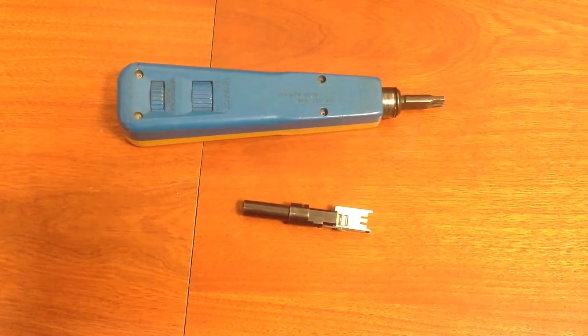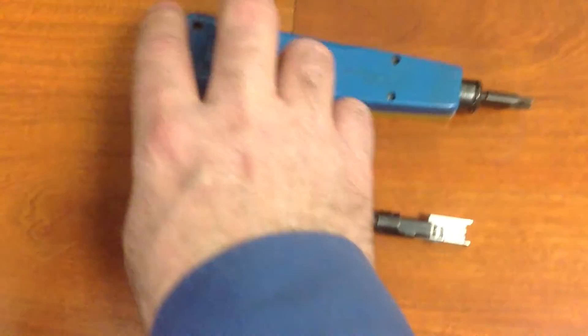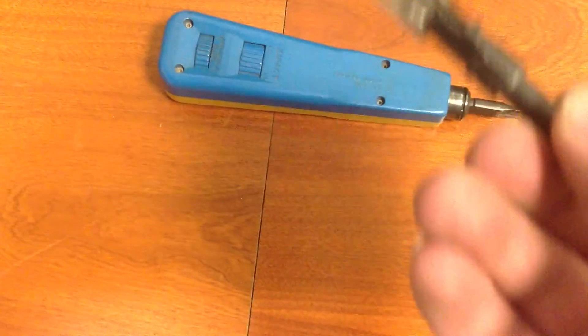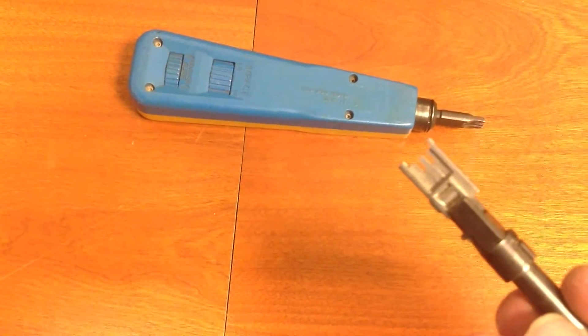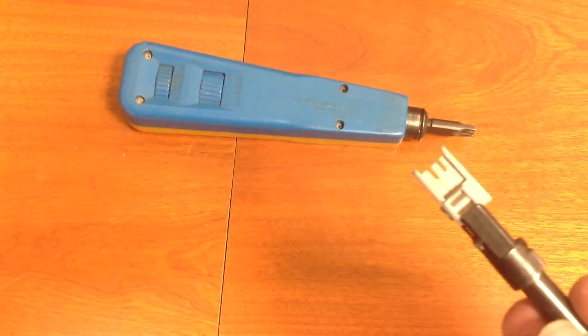To work on a BIX block, you need what is known as a BIX tool. A BIX tool is this little guy here. See him? A little fancy. Got a little cutter there on top. Special punchdown configuration.